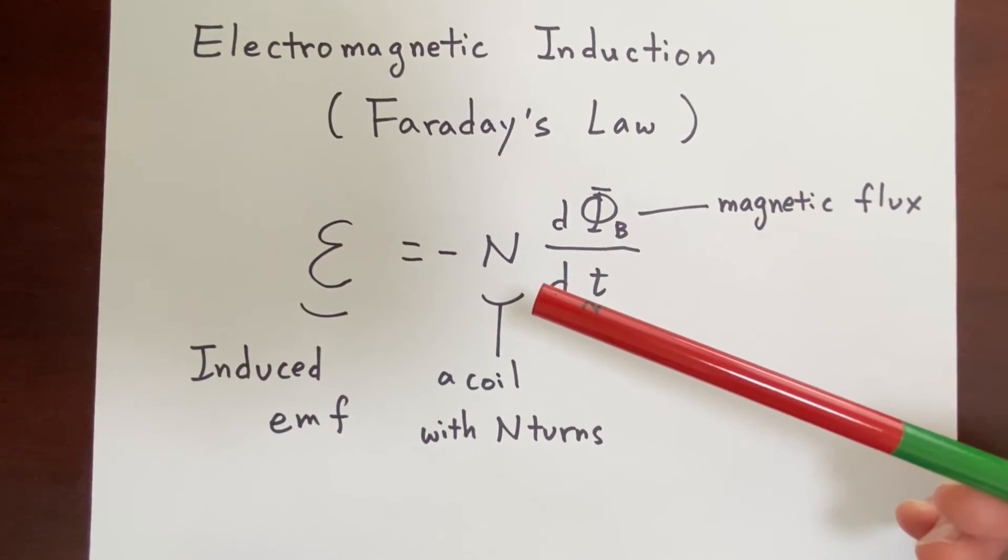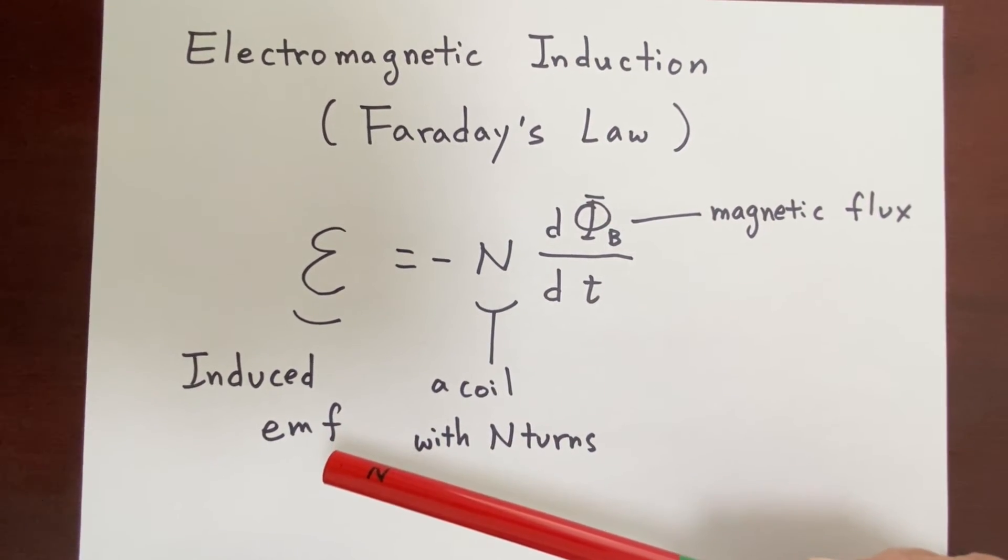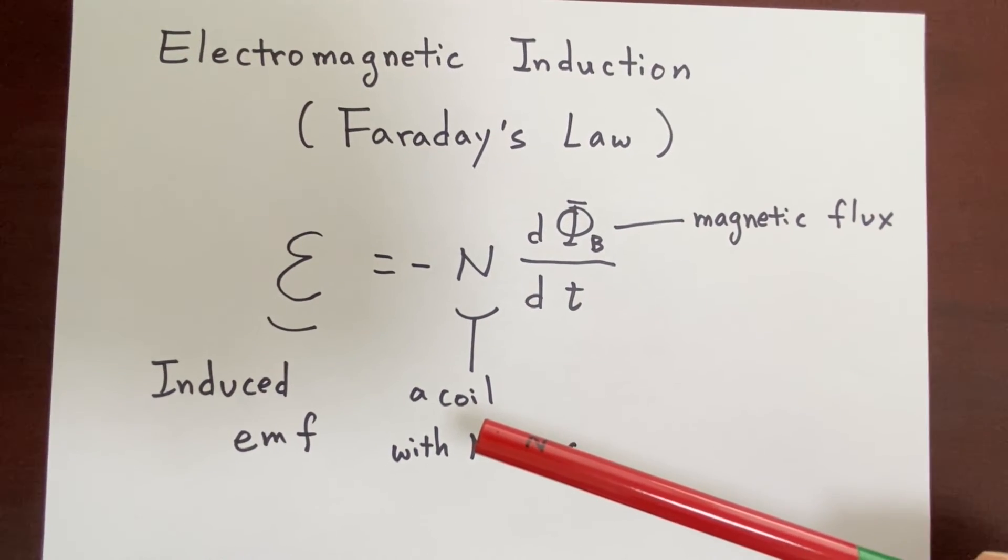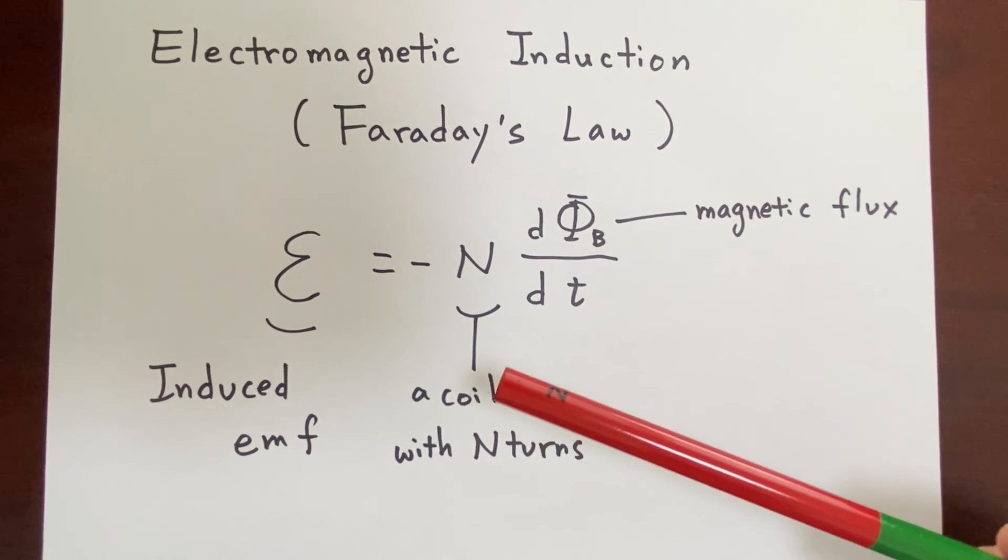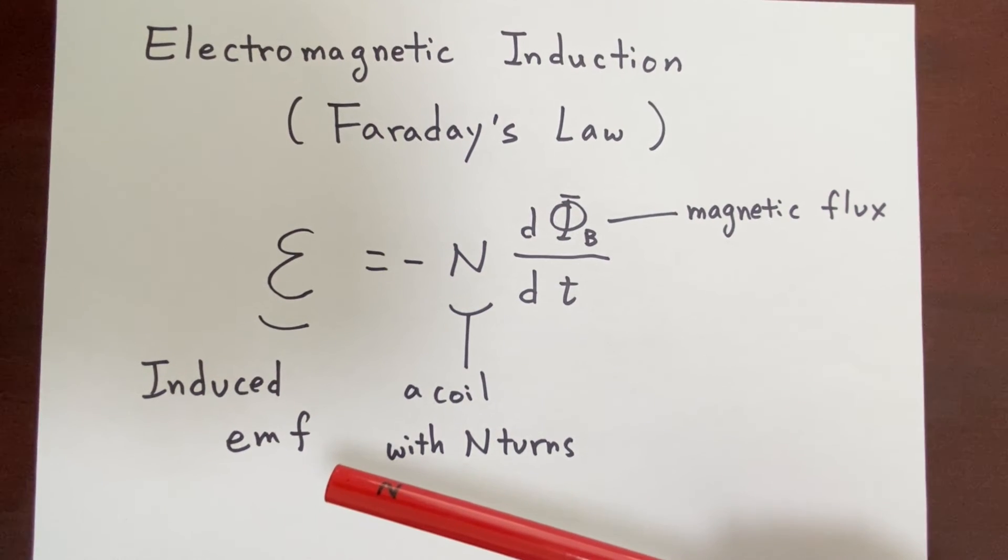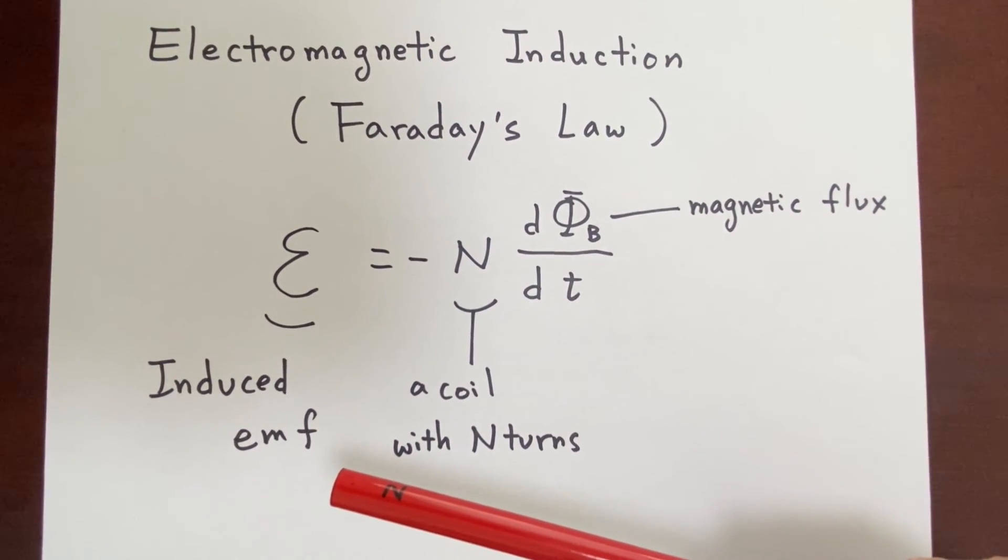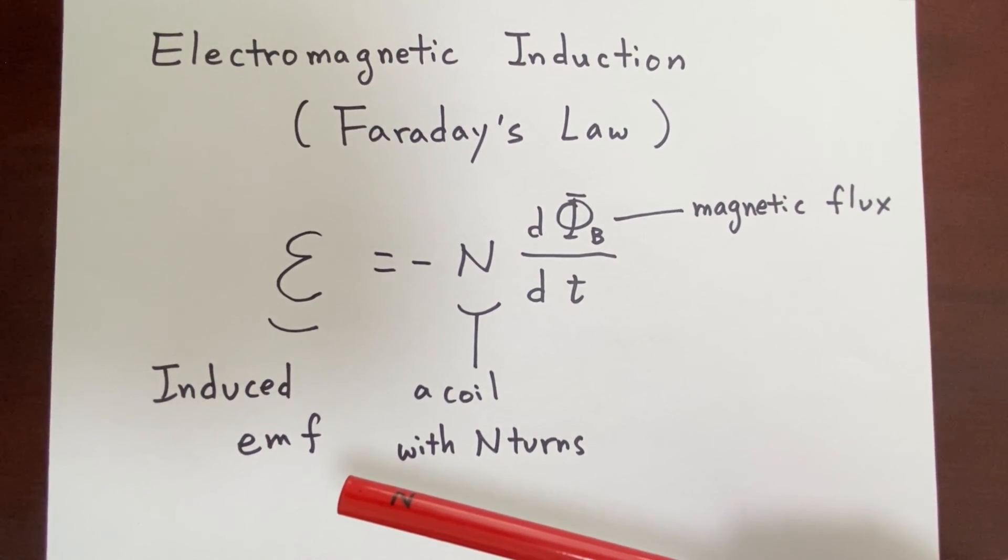Compared to the first case, in the second case, induced emf becomes twice. In the first case, average value of the induced emf is 2.5 mV. In the second case, number of turns of the coil becomes twice. Induced emf becomes about 5 mV. We could confirm Faraday's law with this simple experiment.